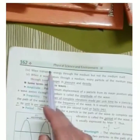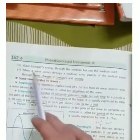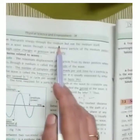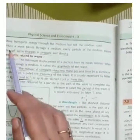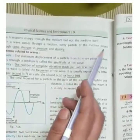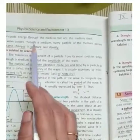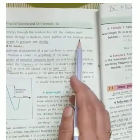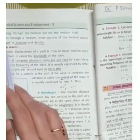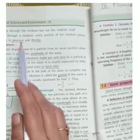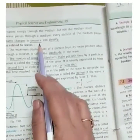You can come to page number 162. For number 4: Wave transports energy through the medium. Wave passes through a medium, every particle of the medium passes through the same changes in pressure and density. Yarni ke har particle medium ka will go through the same changes in pressure and density.